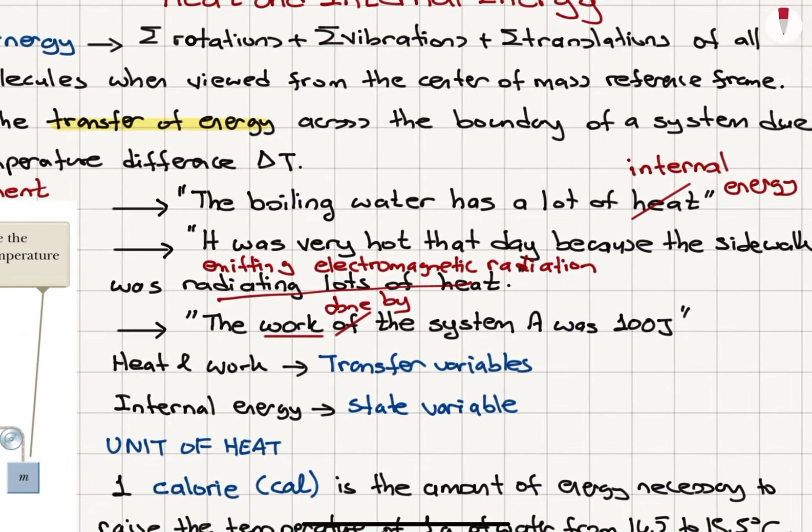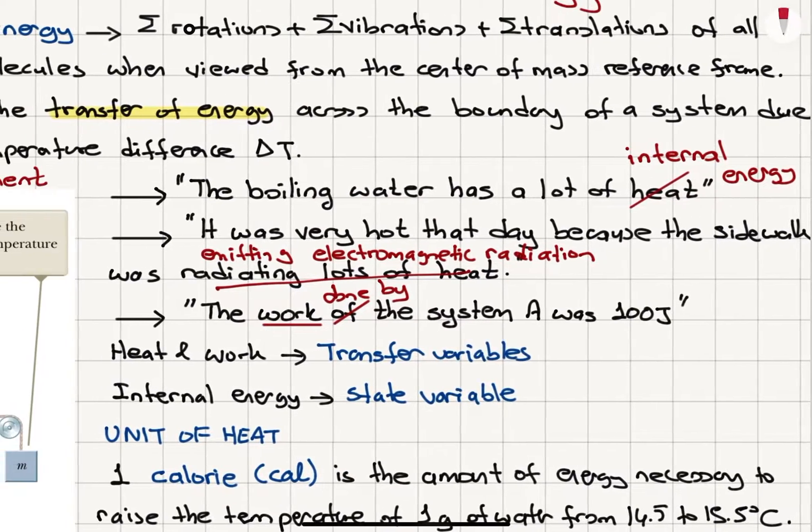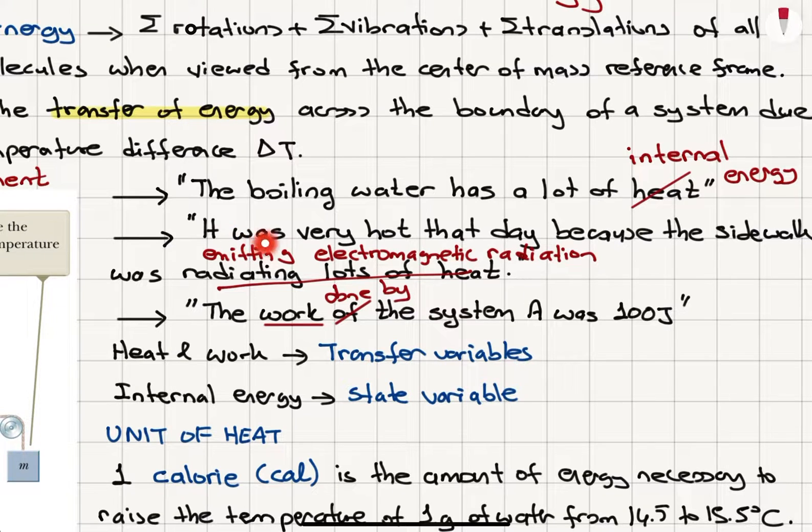So if we say the boiling water has a lot of heat, this statement is incorrect. The correct version is the boiling water has a lot of internal energy because heat is either absorbed or released by boiling water. It is not the energy of the boiling water. Another common mistake.